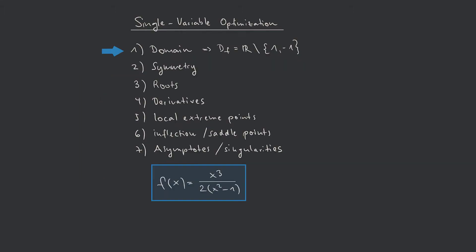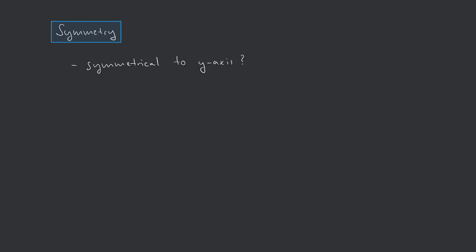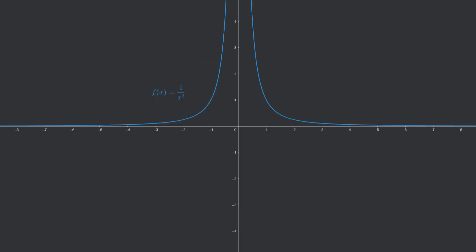The next step is symmetry. Even though there are many kinds of possible symmetries, we restrict our examination to two kinds: symmetry to the y-axis and symmetry to the origin. If a function is symmetrical to the y-axis, it needs to satisfy the condition f(x) = f(−x) for every x in its domain. Consider the example f(x) = 1/x², which is symmetrical to the y-axis.